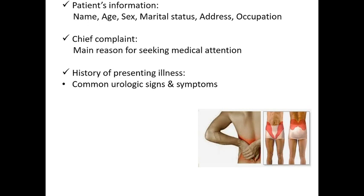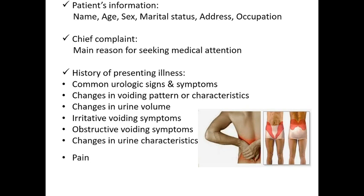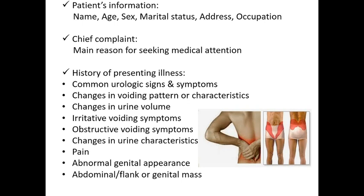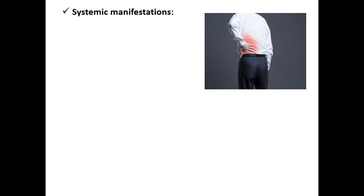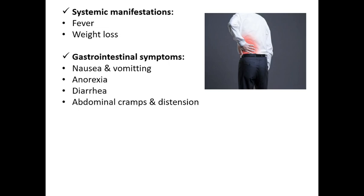The history of presenting illness should include the common urological signs and symptoms: changes in voiding pattern and characteristics, changes in urine volume, any irritative voiding symptoms, any obstructive voiding symptoms, any changes in urine characteristics, pain in detail, any abnormal appearance in the genital area, any palpable mass in the flanks or loin, and any sexual dysfunction related to the condition. You should also inquire about systemic manifestations such as fever, weight loss, and gastrointestinal symptoms like nausea, vomiting, anorexia, diarrhea, abdominal cramps, and distension.